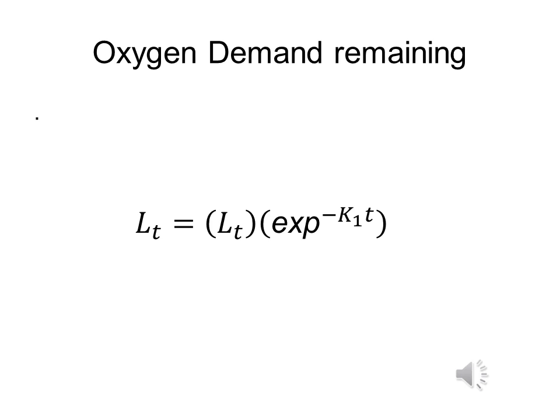The other curve is the oxygen demand curve, this follows a logarithmic scale. The formula for it is as shown. LT, the oxygen demand remaining, is equal to LA, the initial oxygen demand, which is multiplied by the E exponential to the power of minus K1, the deoxygenation rate, by T time.